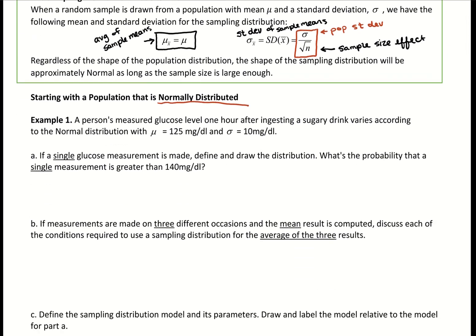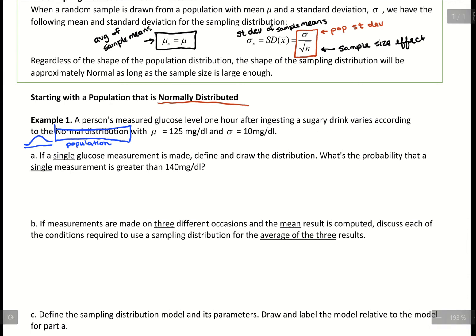A person's measured glucose level one hour after ingesting a sugary drink varies according to the normal distribution. The wording 'varies according to the normal distribution' is very important — it tells us our population is normally distributed. So we know if we had our population data, we'd have a nice bell-shaped curve with a given mean and standard deviation. We have our information about the population.